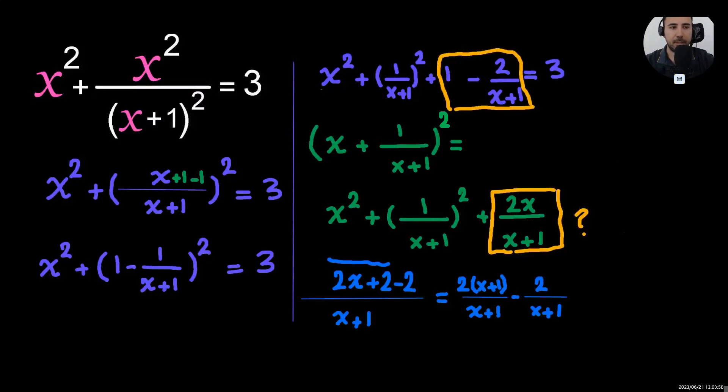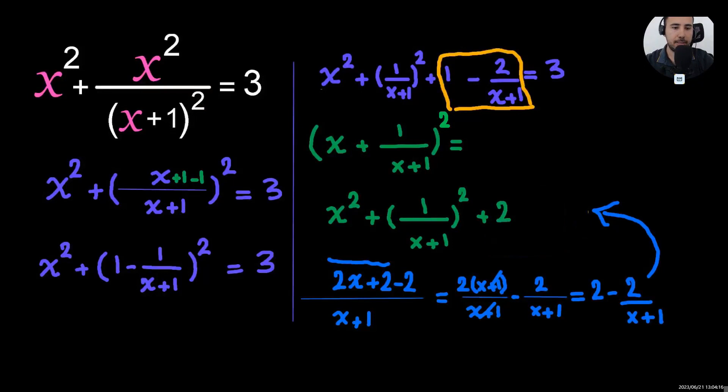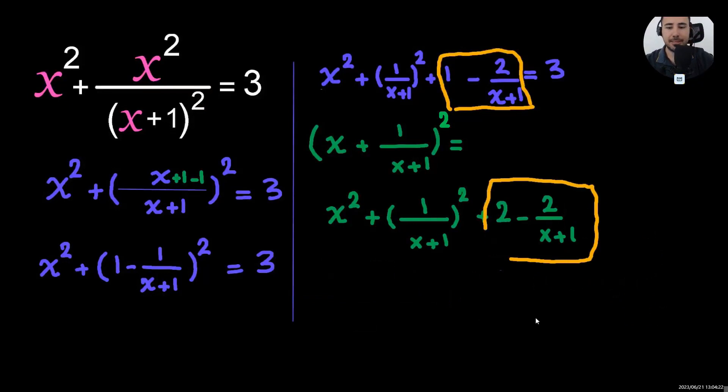See, the first one, x plus 1 over x plus 1 is going to be simplified. So we're going to get this. Now pay attention. So we're going to write this. 2 minus 2 over x plus 1. And now, you see, these two, if they were the same, then the purple equation would already be a perfect square. But you see, it's not. We need 2 minus 2 over x plus 1. What we have is only 1. So what should we do? We add plus 1 to both sides of the equation.